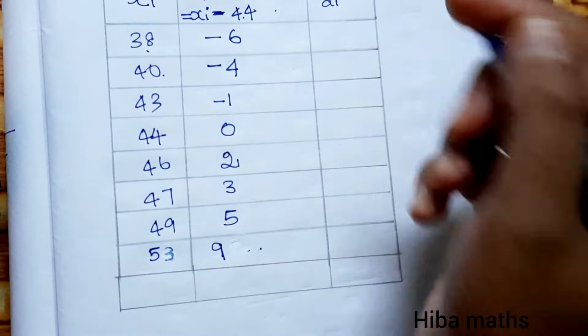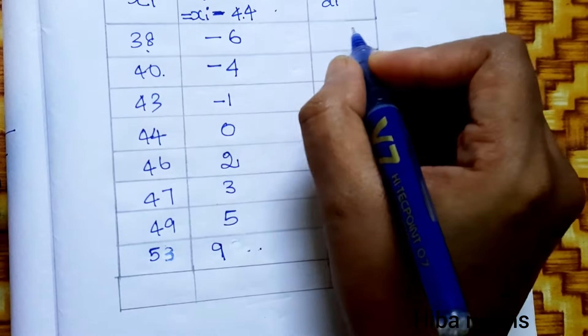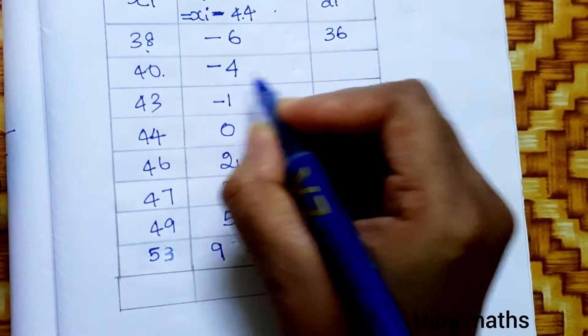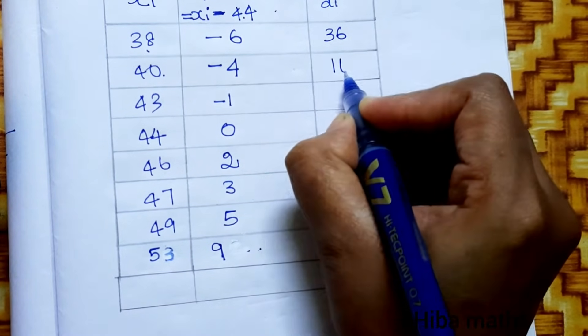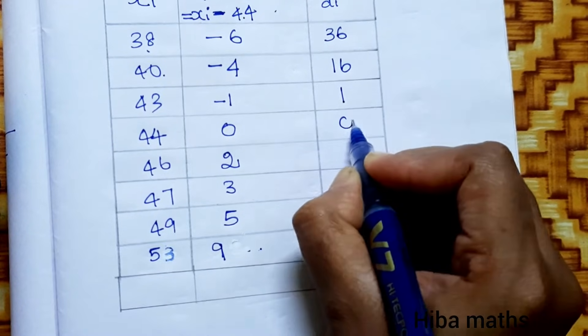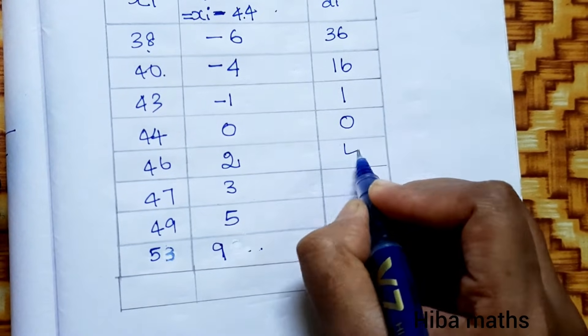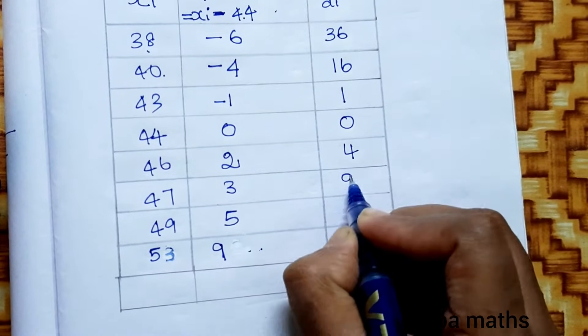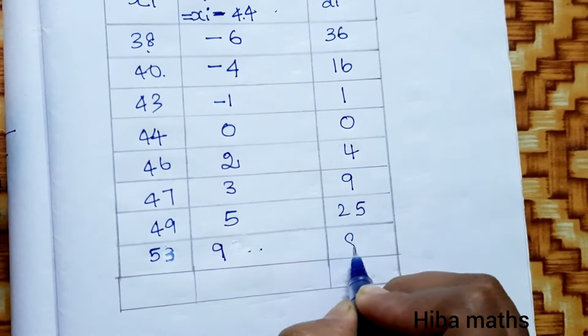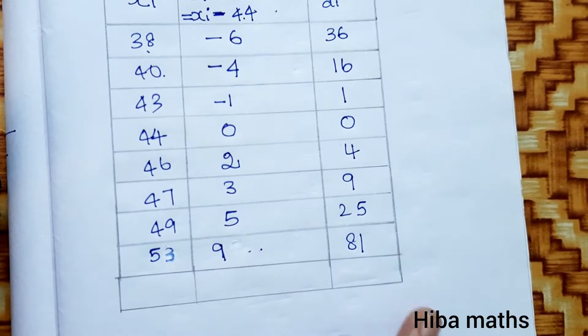Next, compute di squared. The di² values are: 36, 16, 1, 0, 4, 9, 25, 81.